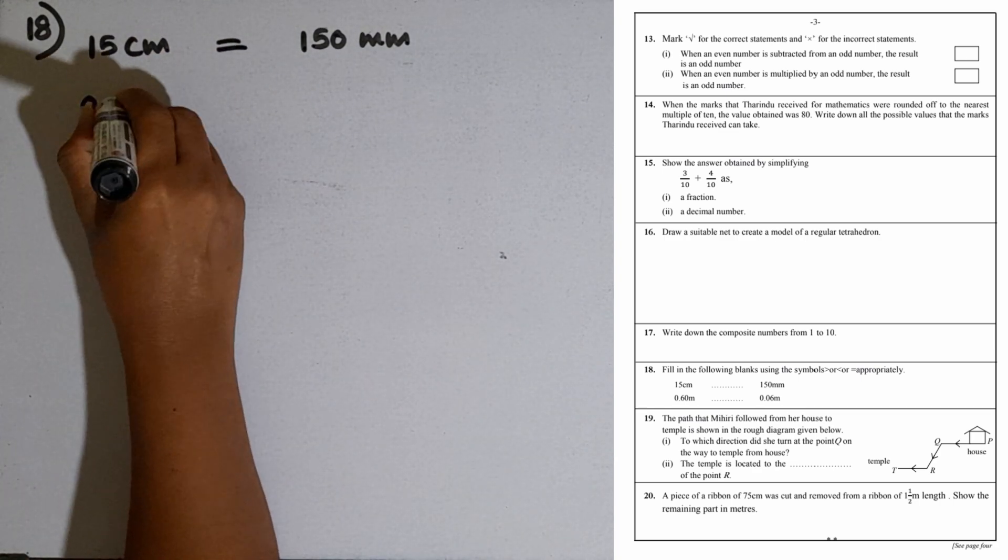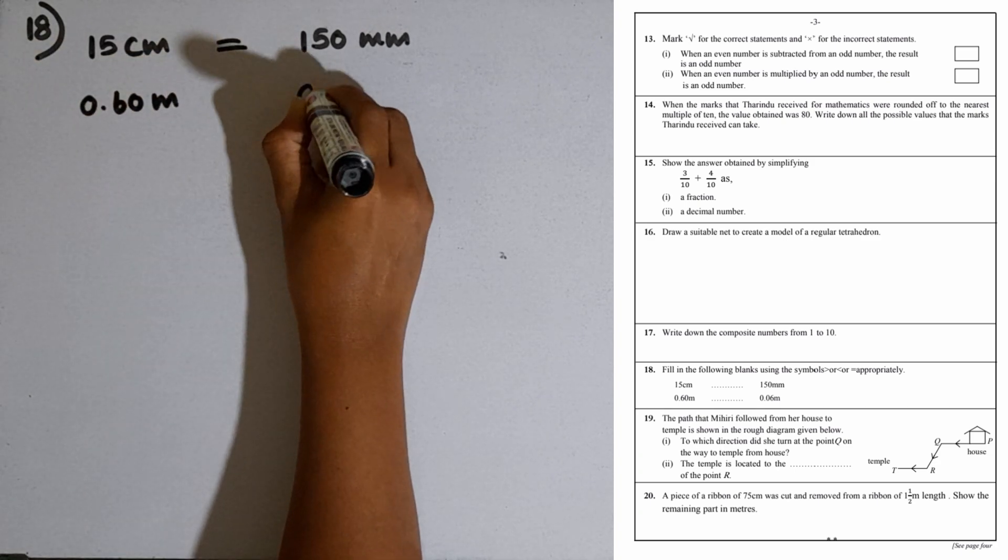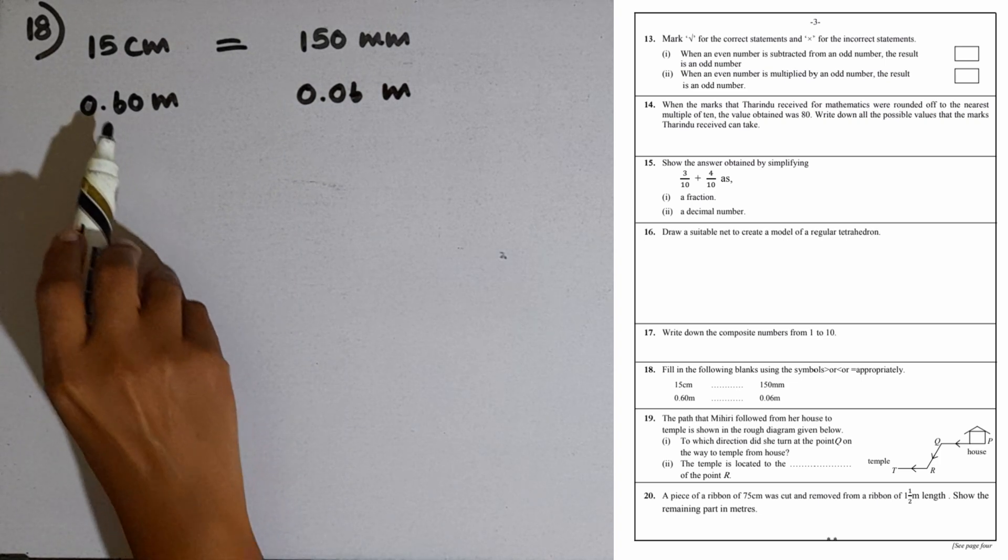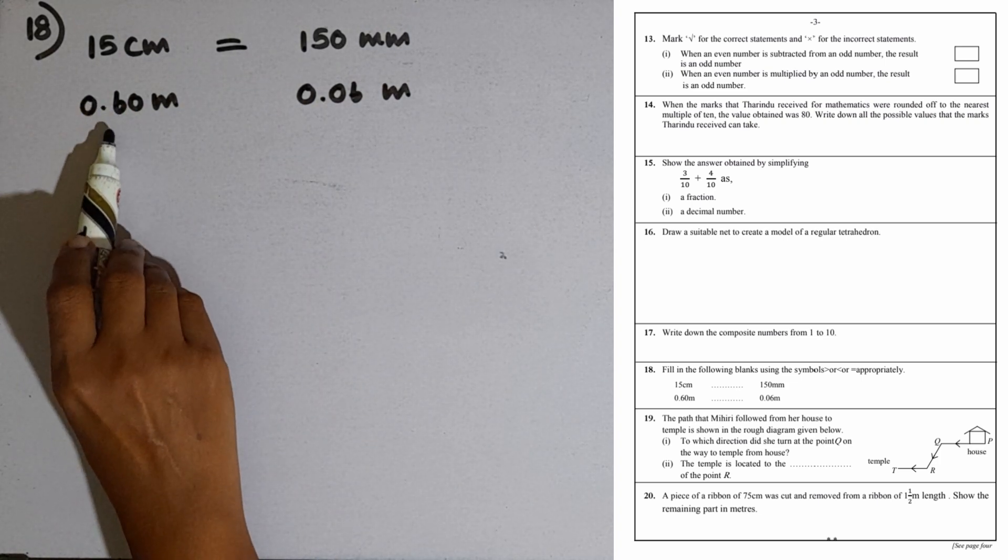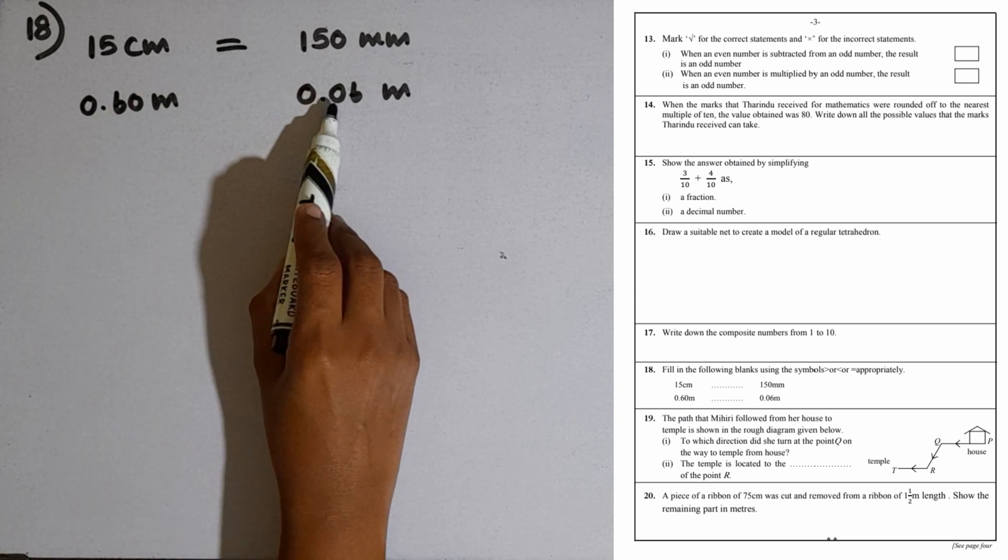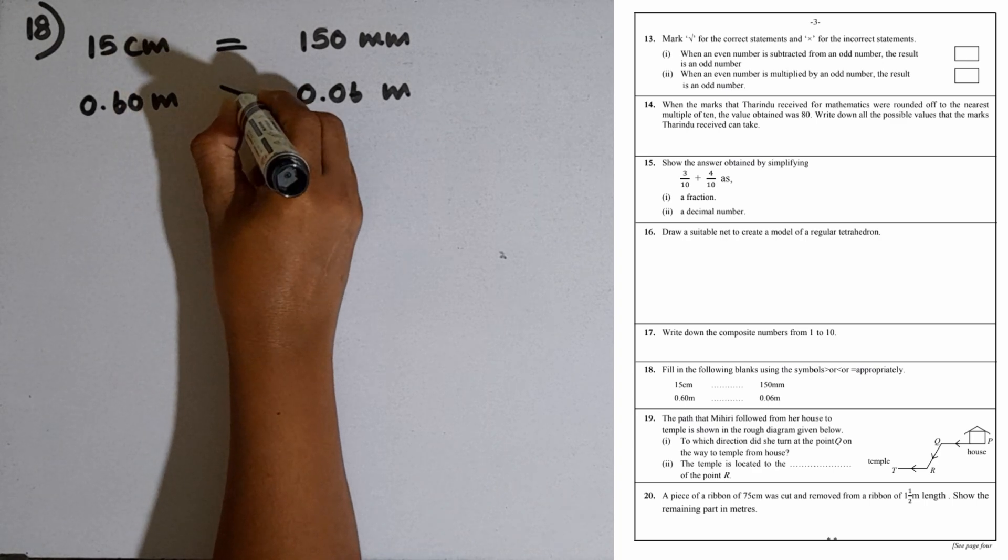Second part: 0.60 meters and 0.06 meters. If we consider these two decimal numbers, in the first decimal place we have the digit 6, here 0. So this one is the largest. We have to use the greater than sign.